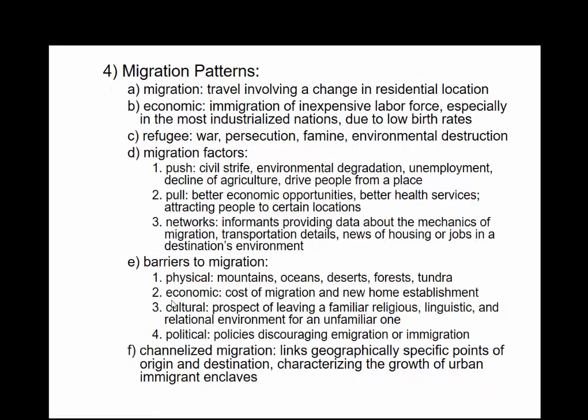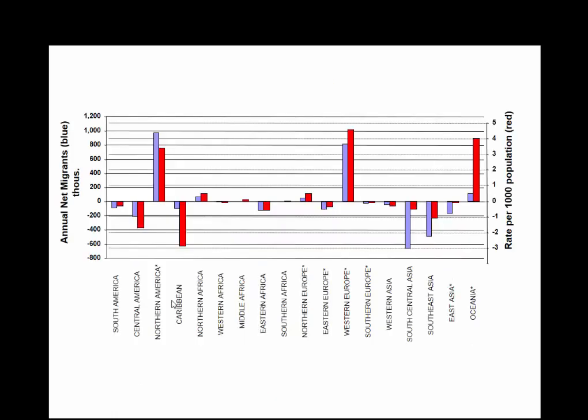Migration patterns: where are people moving to? We've got push factors — what pushes you from an area — and pull factors — what pulls you to one. In the United States, people move not particularly due to civil strife, but you see examples of that in Syria. Environmental degradation and unemployment drive people from places, while better services and cost of living attract them. At the worldwide scale there's only one way in and out, but regionally migration is much higher in North America, Western Europe, and Oceania — especially Australia and New Zealand.